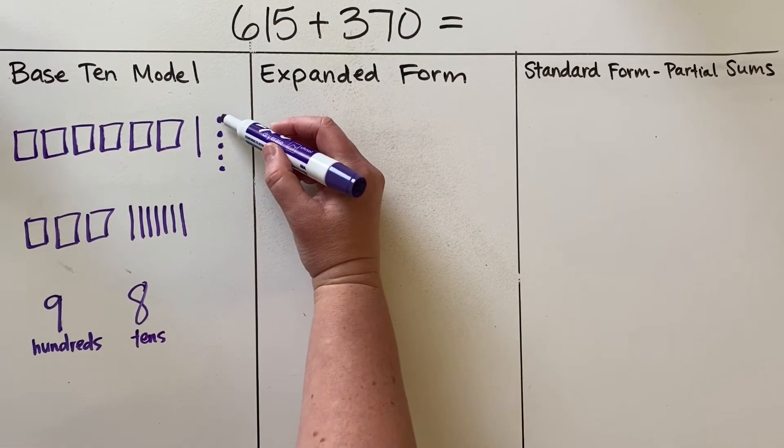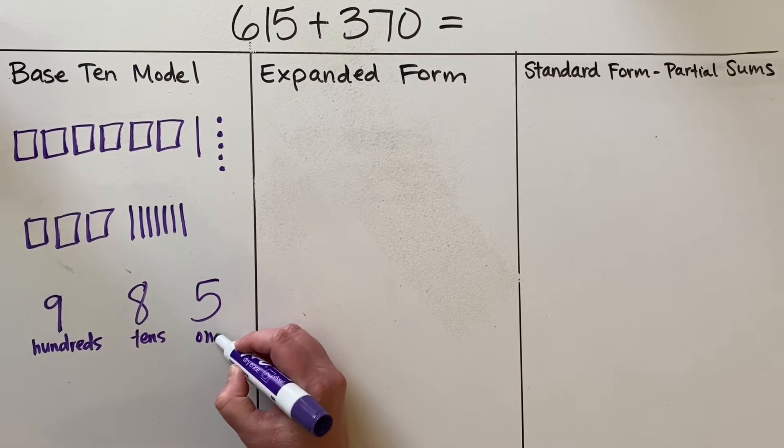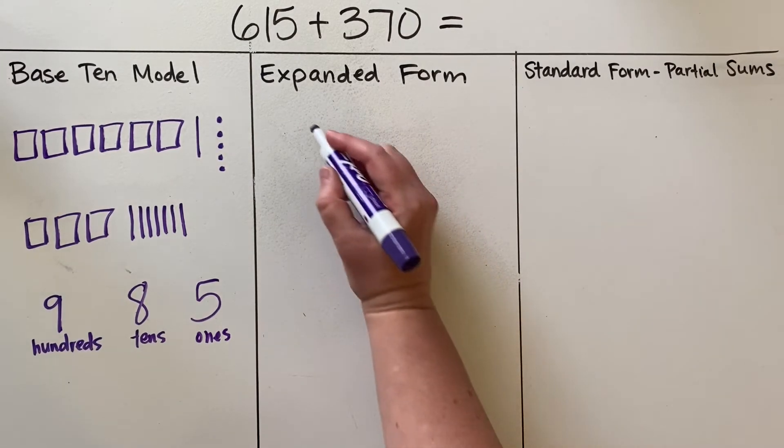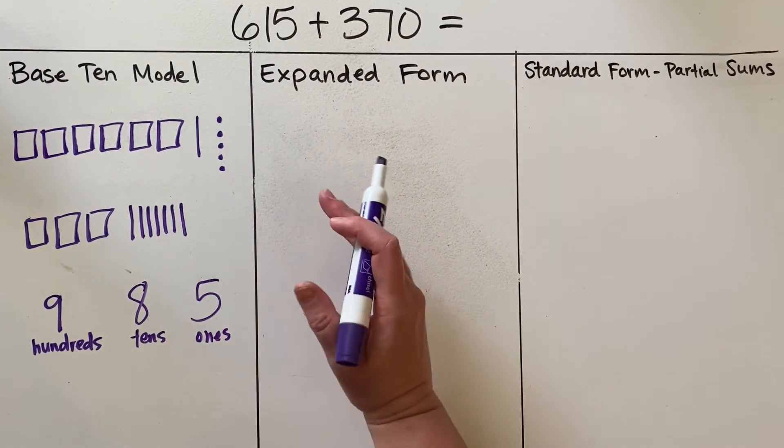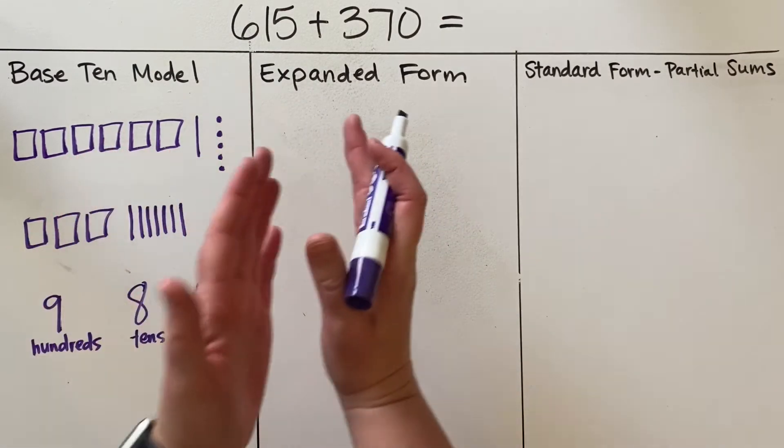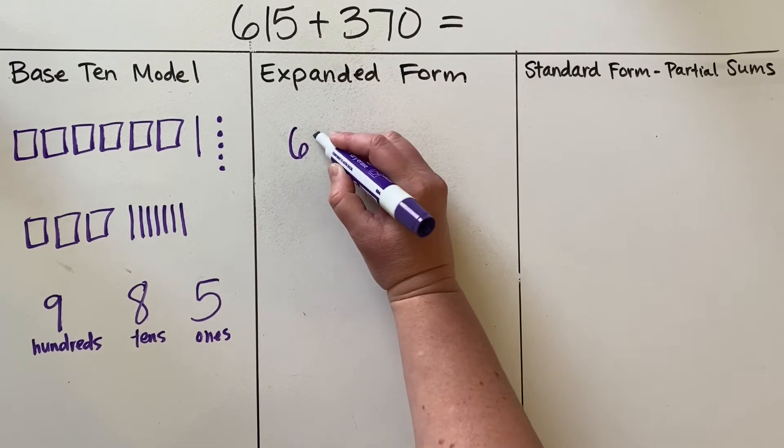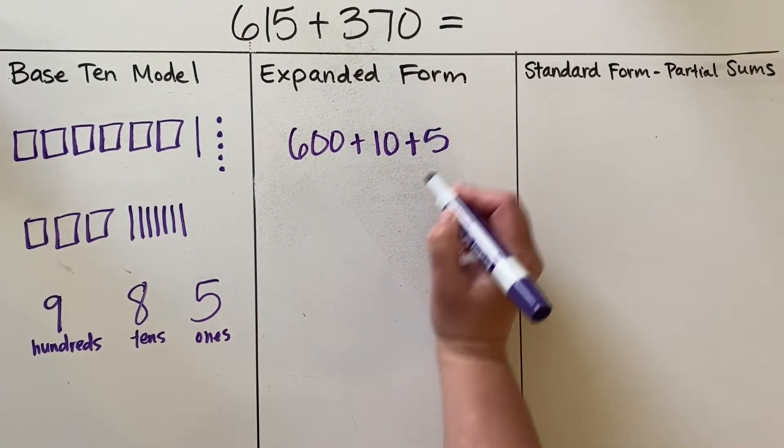And counting up my ones, there's one, two, three, four, five—five ones. Okay, and now showing it in expanded form, I would write each addend and expand it by place value. Remember, it's putting the hundreds plus the tens plus the ones. So six hundred fifteen would look like this: 600 plus 10 plus 5.